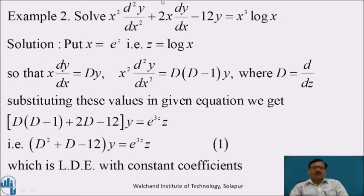Now we will solve one more example. Solve x²d²y/dx² + 2x dy/dx - 12y = x³ log x. Using the substitution x = e^z, z = log x, so that x dy/dx = Dy and x²d²y/dx² = D(D-1)y, where D = d/dz. Substituting gives D(D-1) + 2D - 12 of y = e^(3z)·z. Simplifying: (D² + D - 12)y = e^(3z)·z. Let this be equation number 1, which is a linear differential equation with constant coefficients.